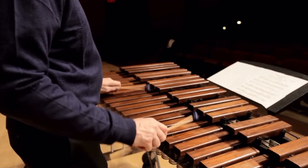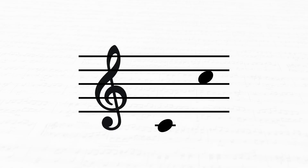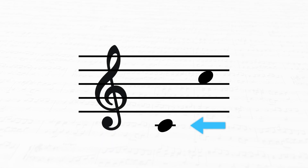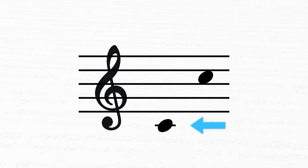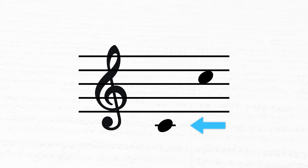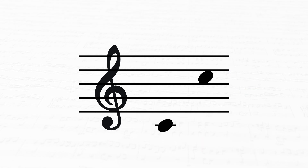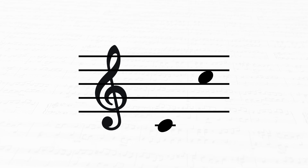On xylophone, the notes you see on the page are going to be displaced or transposed by one octave, meaning that when you read C4 — also known as middle C — on the page, the note you'd actually play or hear would be C5, which is one octave above C4. Another simpler way to think about it is that the notes you play are going to sound one octave higher than what's written on the page.